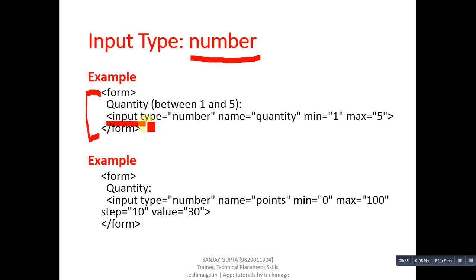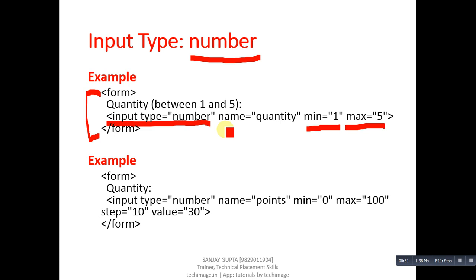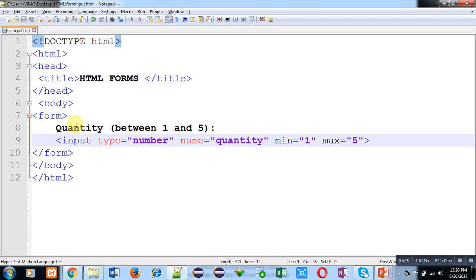I have to implement input type number so that I can create a number input box. Here minimum value is 1 and maximum value is 5, so I can enter values between 1 to 5 using input type number. Its name is quantity — the name attribute is used to define an identification of the HTML element which can be used by a server-side scripting language.